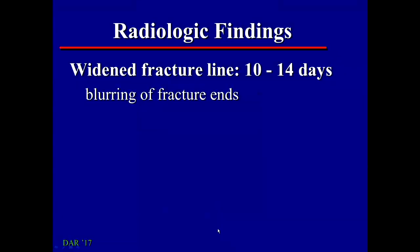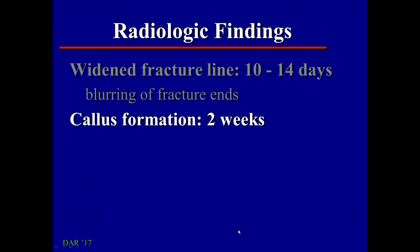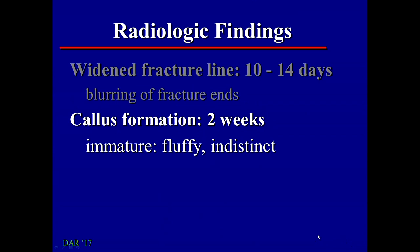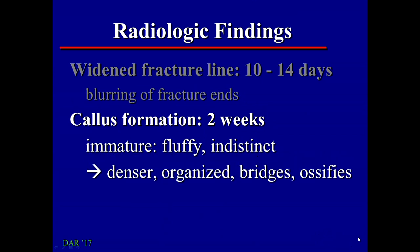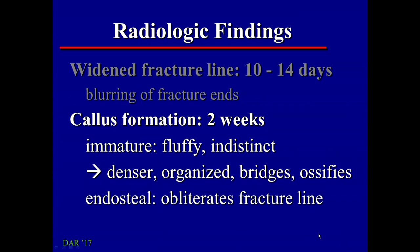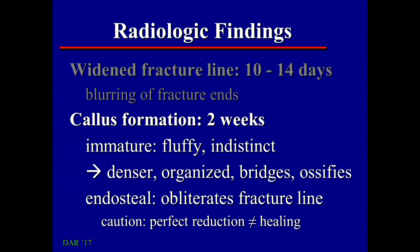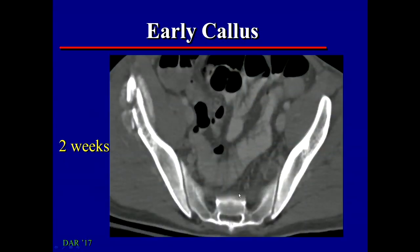The second major finding of healing is callus formation. The earliest callus formation is recognized at around two weeks. It initially is immature bone, and that looks fluffy and very indistinct. Over time, that will become denser, more organized, and will eventually bridge the fracture and then ossify. The callus on the inside of the fracture we recognize as obliterating the fracture line. In a case where operative reduction has been done with a perfect reduction, the fracture line disappearing doesn't necessarily mean it's healed — we have to see bone going from point A to point B. On CT at two weeks, you'll see very indistinct, cotton candy-looking new bone formation.